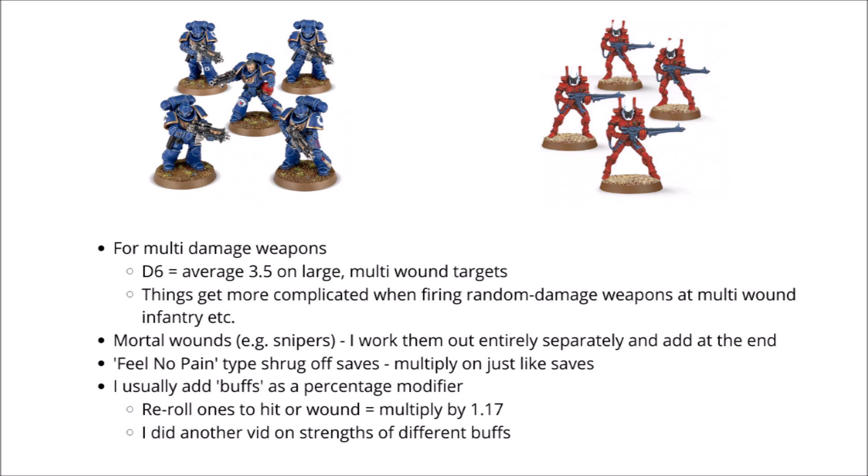If you have any weapon characteristics with a random number in them — say a D6 — in terms of the multiplication value I'd typically multiply it by 3.5, as that's the average for a D6 dice roll. So say if you were firing a frag missile launcher with D6 shots, I'd start the calculation with 3.5 shots per frag missile. Similarly, if you were firing a lascannon at a tank, at the end for the damage phase I would use 3.5 as the number of expected damage per D6 damage result. The dice results get a lot more complicated when firing random damage weapons at multi-wound models that don't have loads of wounds — things like 3-wound Bulgrin — and for simplicity I'm not going to go into that here.